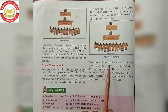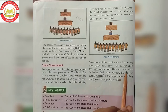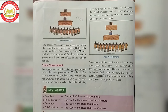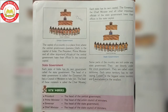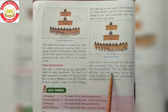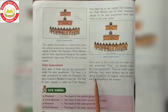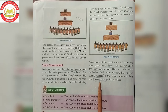Some parts of the country are not under any state government — kuch parts aise hain jo state government ke under nahin hain, ya jinका apna ek government nahin hai. They are directly under the Union Government, matlab Central Government se directly control ho rahe hain. They are called Union Territories. Union territory ka matlab hai aisa area jiska apna state government nahin hai. Each union territory has its own capital, but control karega directly Central Government.